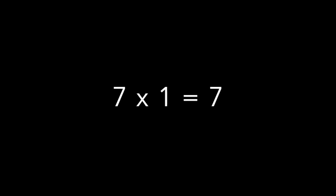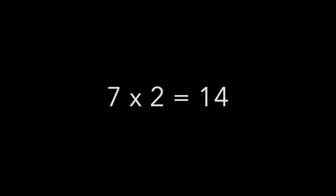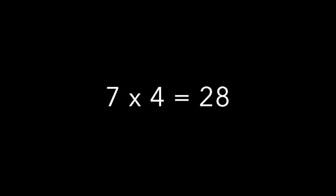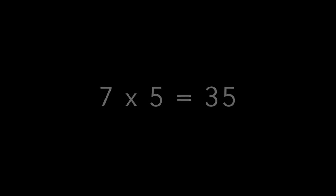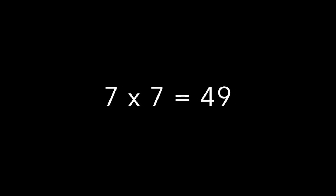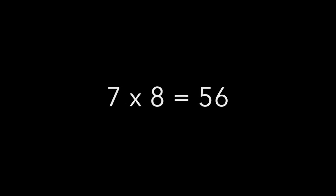7 times 1 equals 7. 7 times 2 equals 14. 7 times 3 is 21. 7 times 4 is 28. 7 times 5 is 35. 7 times 6 is 42. 7 times 7 is 49. 7 times 8 is 56.